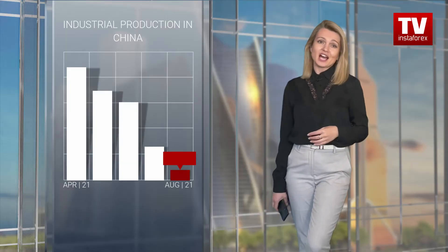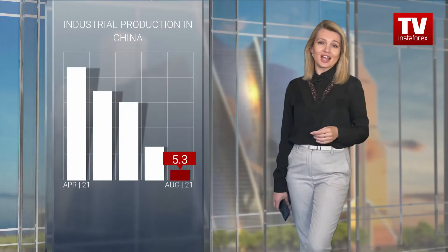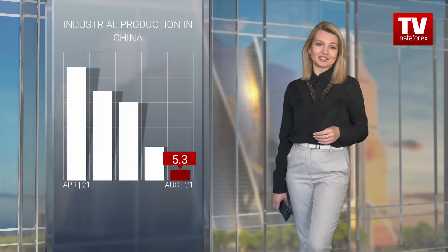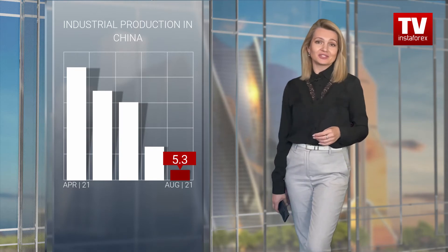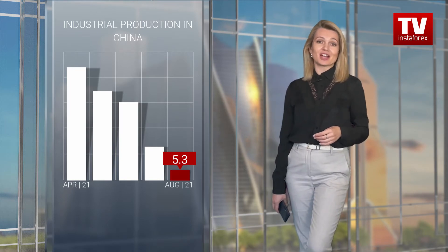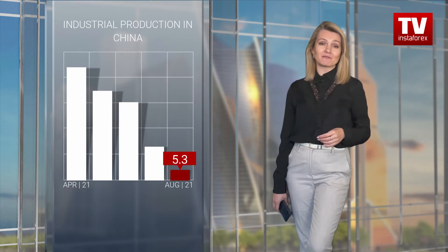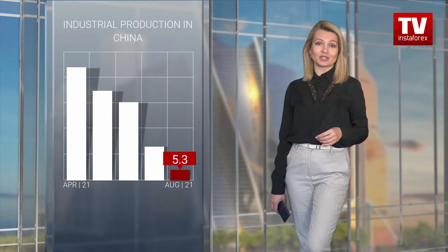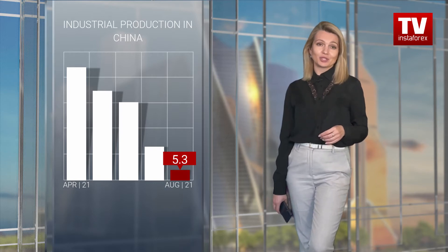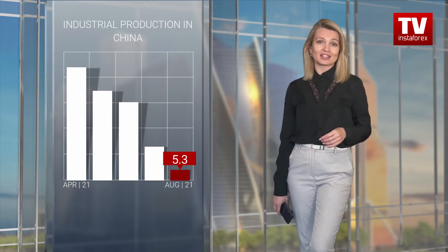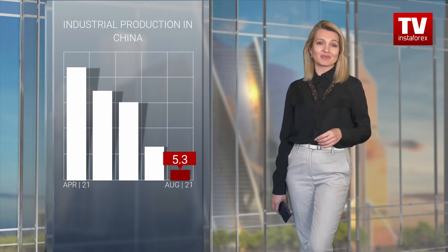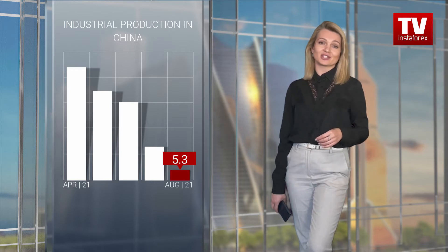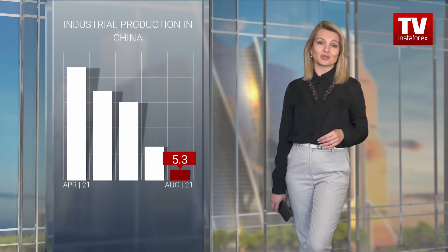China finally unveiled long-anticipated economic data. As it turned out, industrial production increased by 5.3% year-on-year in August 2021, which was shy of analysts' forecasts. This was the weakest growth in industrial production since July 2020.